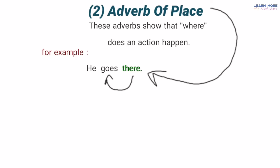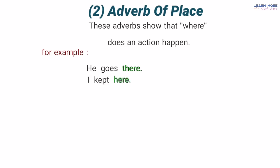'Where did you keep my bag?' — aap ne mera bag kahan rakha? 'I kept it here' — maine yahan rakha. Ab 'here' bhi ek adverb of place hai kyunke yeh uske kaam ke baare mein bata raha hai, uski jagah ke baare mein ke usne kahan rakha — here, yahan.